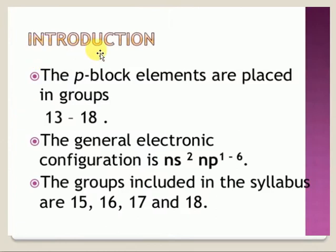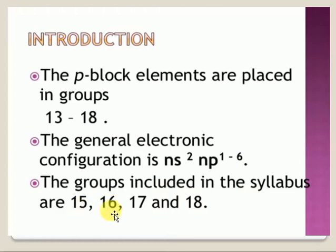P-block elements are placed in between groups 13 and 18. The general electron configuration is ns² np¹⁻⁶. In your syllabus, the groups covered are: 15th group (valence electrons = 5), 16th group (valence electrons = 6), 17th group (valence electrons = 7), and 18th group (valence electrons = 8).